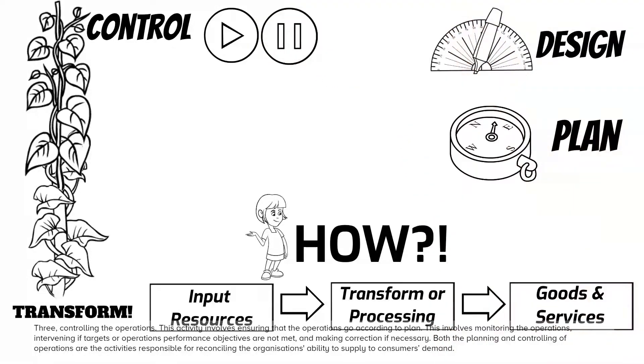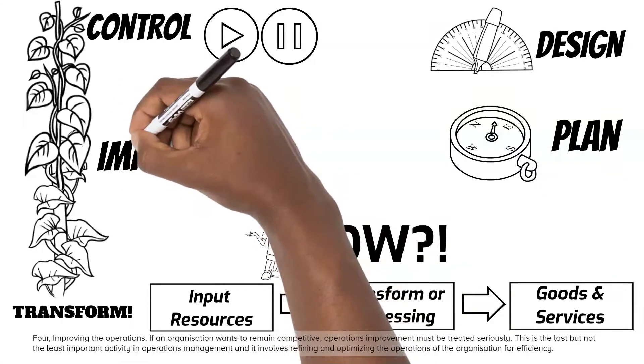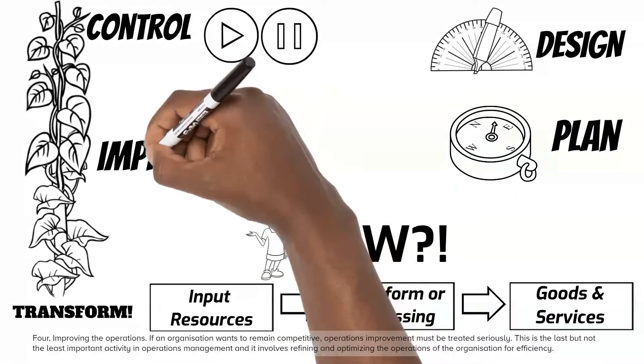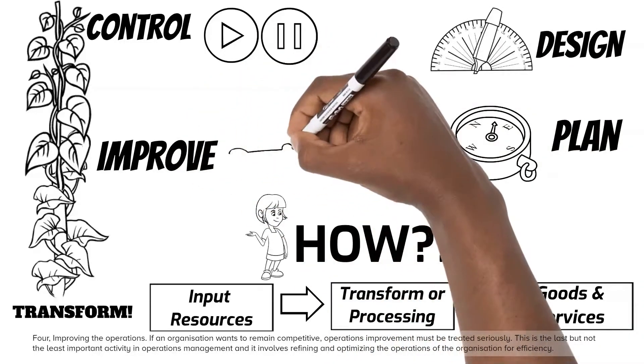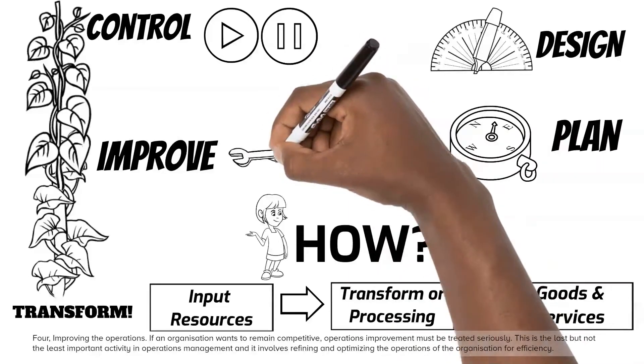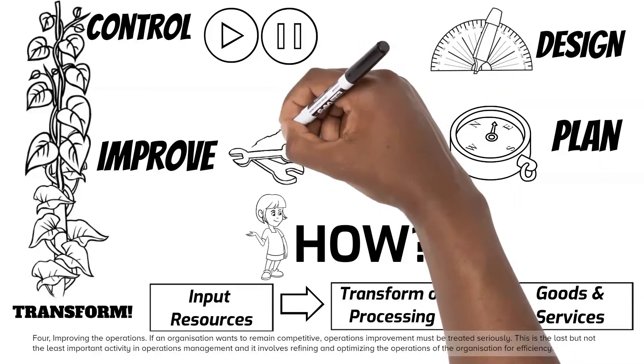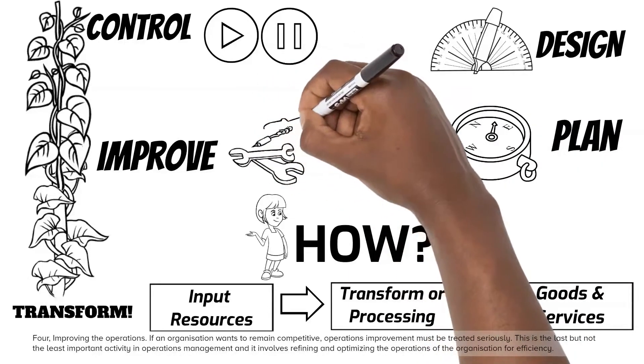Four, improving the operations. If an organization wants to remain competitive, operations improvement must be treated seriously. This is the last but not the least important activity in operations management and it involves refining and optimizing the operations of the organization for efficiency.